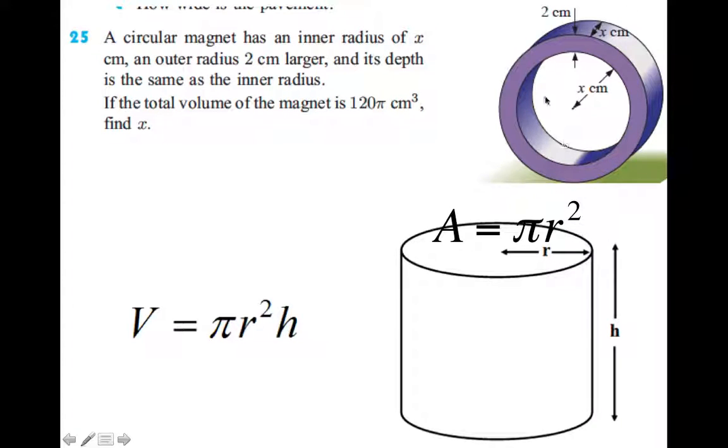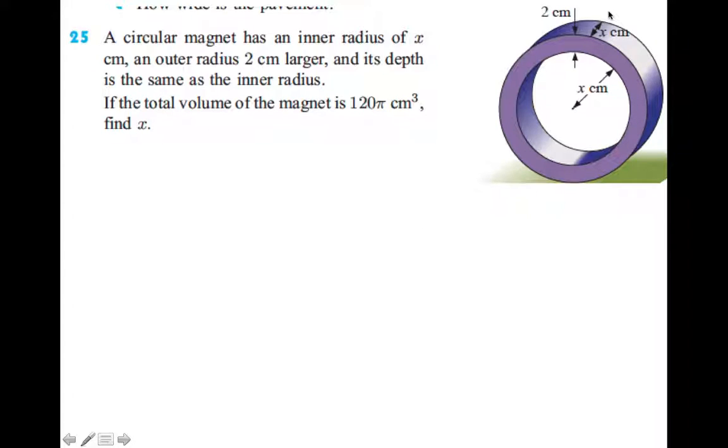So if you look back on this diagram, this one is like this one tipped over. So this πr² is this circle here, and this h is that x there going that way, the height is that way.